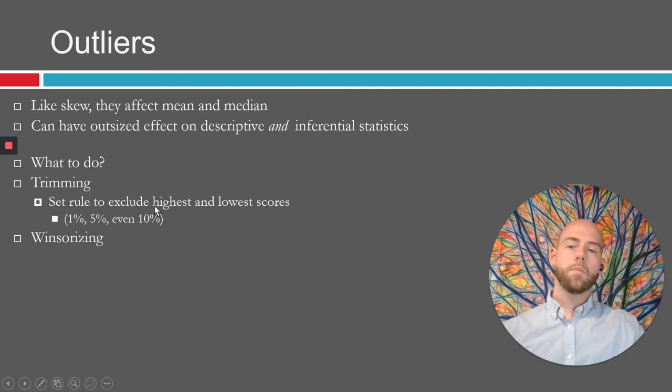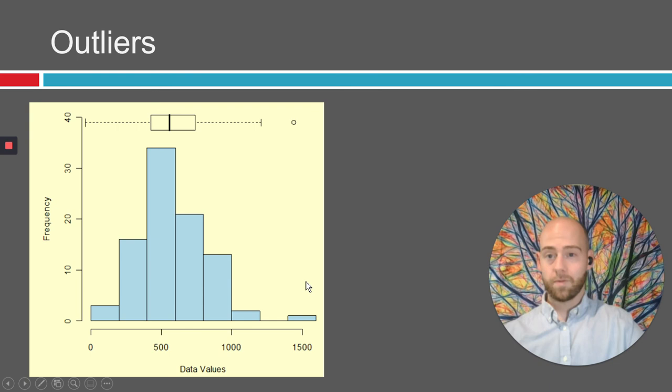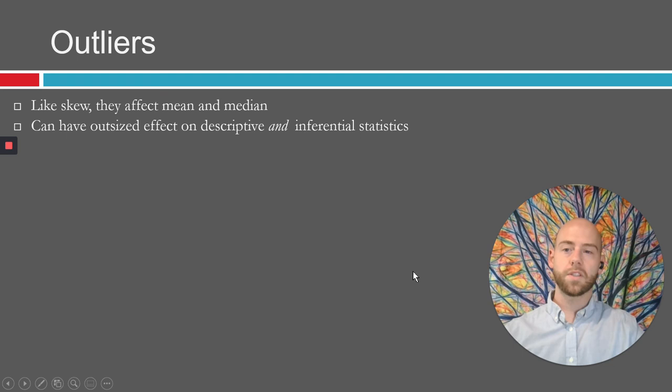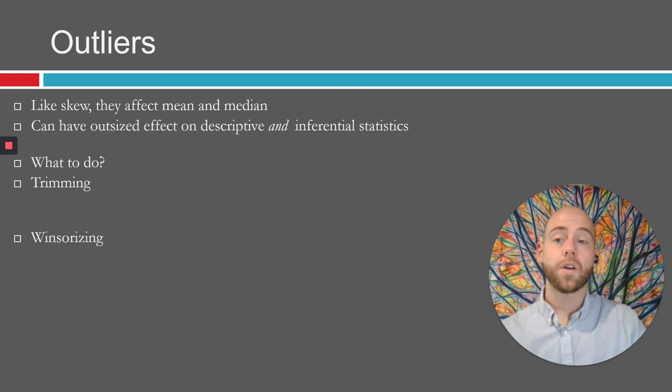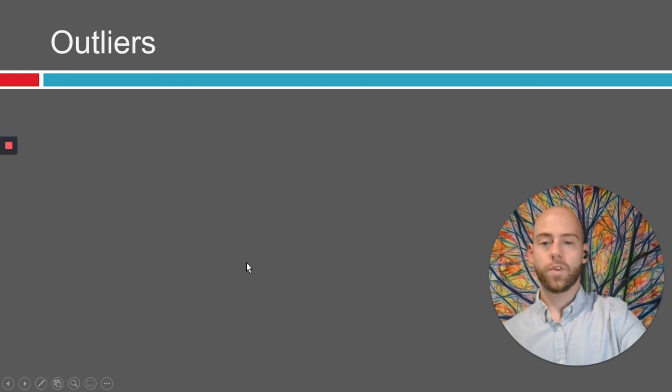An alternative to trimming is called Winsorizing. Winsorizing is when you take those outliers and replace them with the most extreme scores. So this score, you would take away this 1500 or whatever it happens to be, and just replace it in the data with 1000 or whatever this little spot here happens to be. So replacing the most extreme scores with the next most extreme scores. And this maintains the idea that the other variables you're interested in are still producing extreme scores, but not so extreme that they're messing up your distribution.